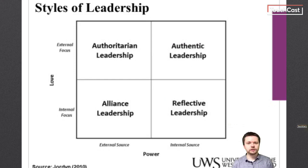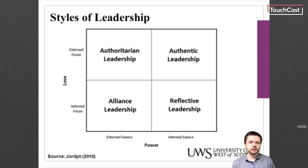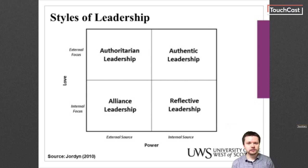Central to the idea of entrepreneurial leadership is the style of leadership itself. This model from Jordan, 2010, highlights four main styles and identifies the key aspects of power and love. Sources of power can be internal or external. A focus on how we love an organisation can also be internal or external. How these relate to each other results in one of four leadership styles: Alliance, Authoritarian, Reflective and Authentic Leadership.